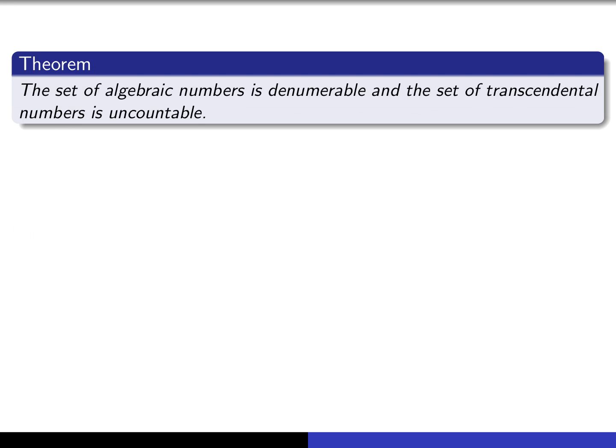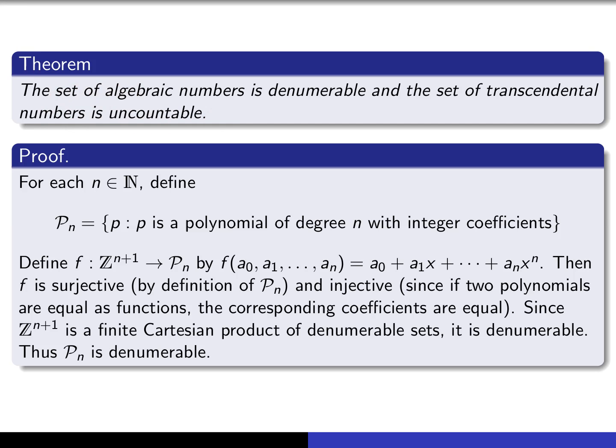So here's the theorem we're going to prove: the set of algebraic numbers is denumerable, and the set of transcendental numbers is uncountable. We're going to see that it follows as a consequence of the theorem derived in earlier lectures — that the denumerable union of denumerable sets is denumerable. This is a nice application of that theorem. The proof really isn't all that difficult; it's just a matter of organizing the work properly.